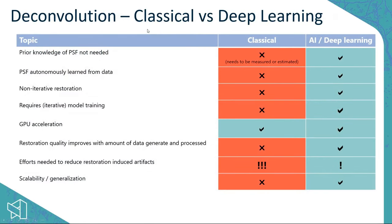Now, what I'm particularly interested in discussing is how the classical approach compares versus the AI or deep learning approach to image deconvolution. Looking at the first item: prior knowledge of the PSF is not required for deep learning, whereas for classical deconvolution the PSF is typically required. It either needs to be measured — which is very time-consuming, requiring bead measurements in multiple conditions — or estimated based on hardware knowledge.